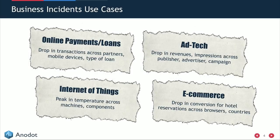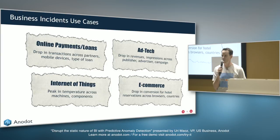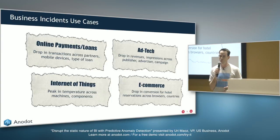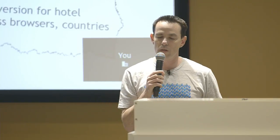For example, companies in online payments or loans — fintech companies — need to execute a lot of transactions, and reliability is really important. If someone is using the system to submit a payment and something is not working, there's a drop in payments from a specific OS or specific partner. It's very hard for companies to discover these things, and by not discovering that, their reliability is damaged and they lose money.